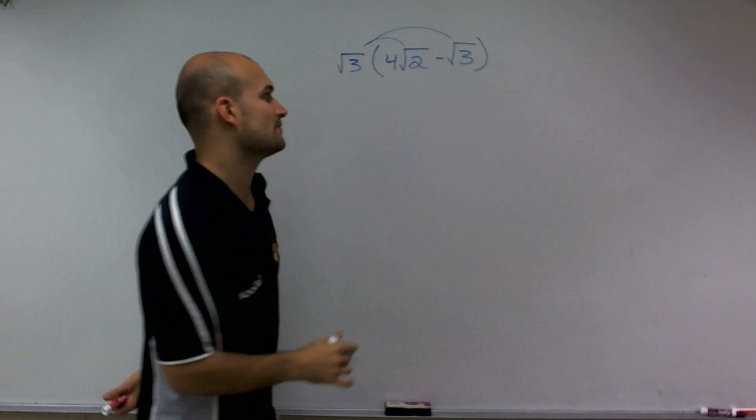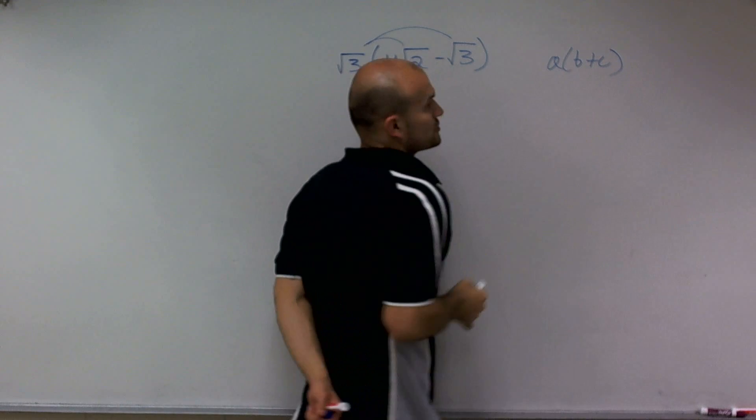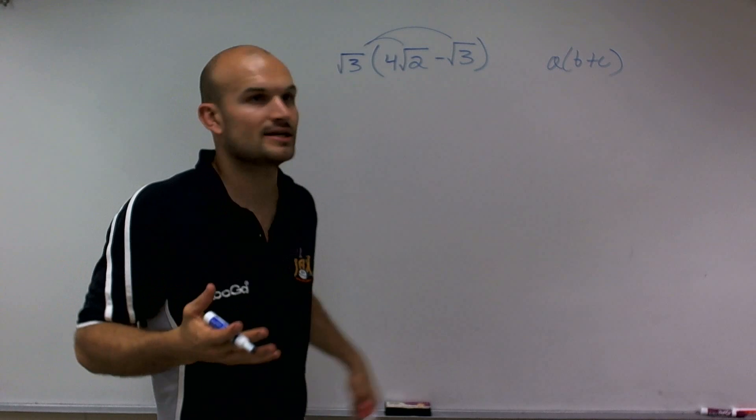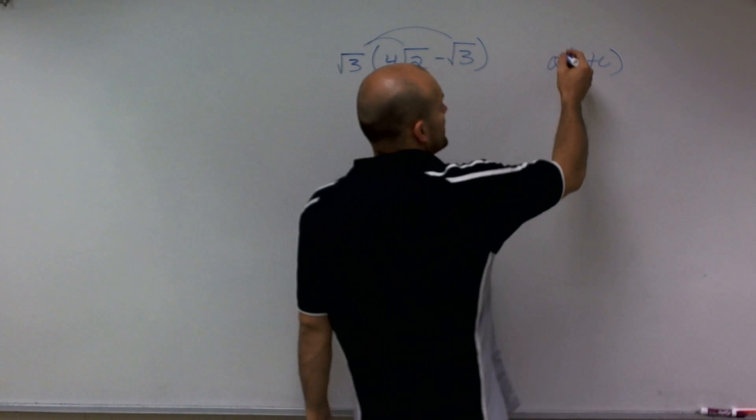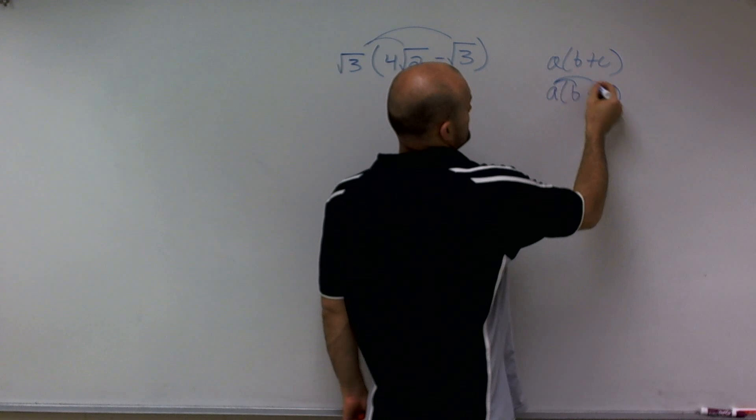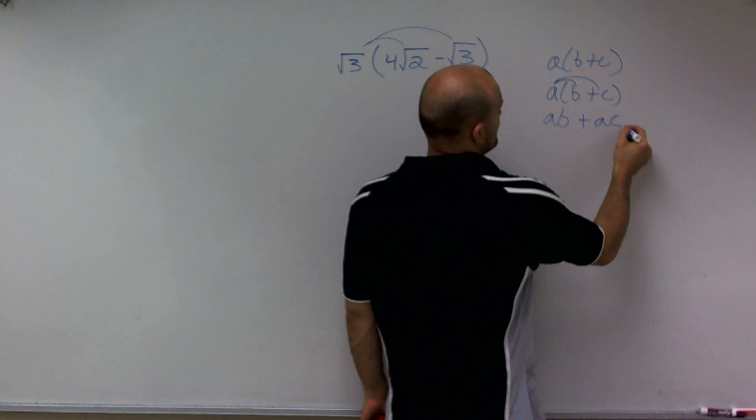So we've got to make sure we use the distributive property. If a is a number times b plus c, or if it's b minus c, it doesn't really matter. I've got to make sure I'm multiplying a times b and a times c, which is going to give me ab plus ac.